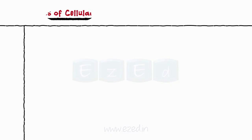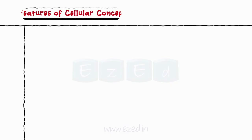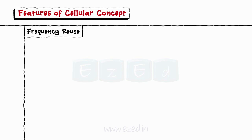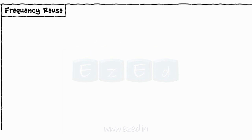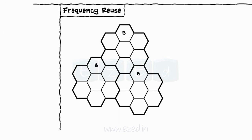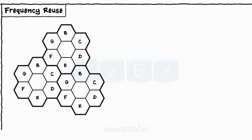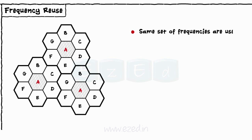Let's see the features of the cellular concept. Its first feature is frequency reuse. In frequency reuse, the same set of frequencies are used for radio channels located in different areas. As shown in the diagram below, every cell named as A uses the same set of frequencies.